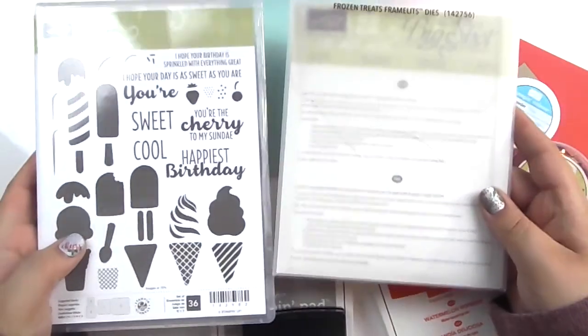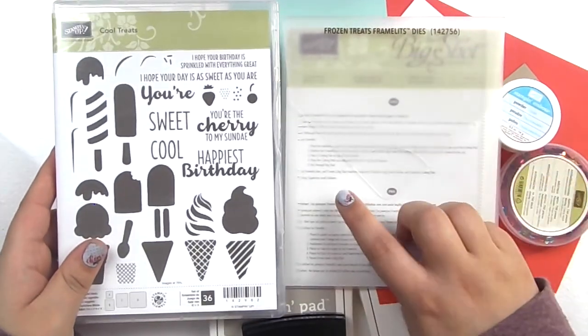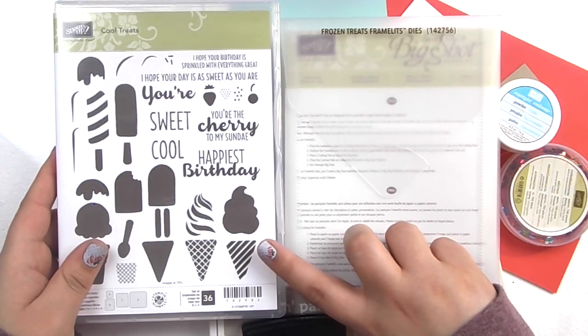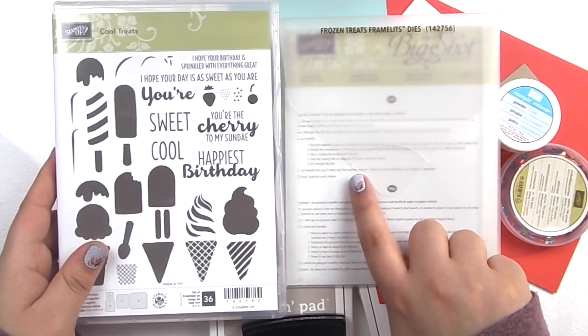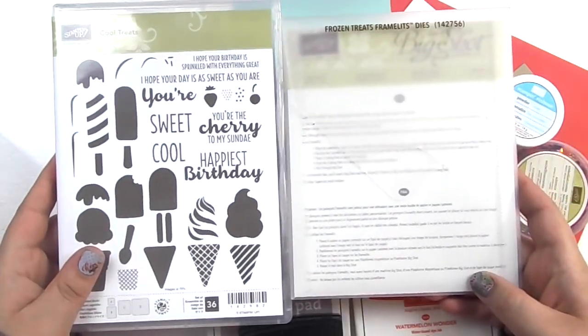The stamp set and framelits that we're going to be using are from the occasions catalog and this is from the tasty treats suite. So we have the cool treats stamp set and then the frozen treats framelits dies. These two coordinate together and they are a bundle in the new occasions catalog.